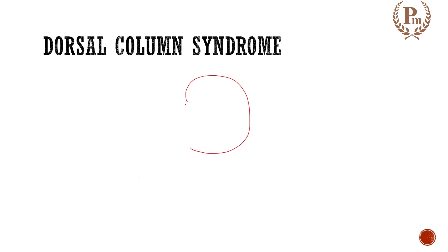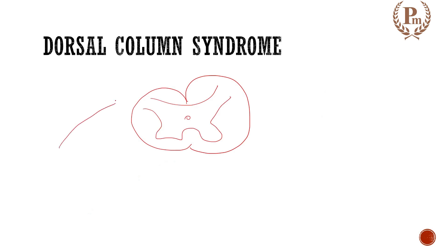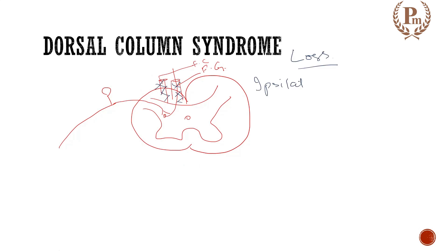Let us study about the dorsal column syndrome. To understand it, let us draw a spinal cord. Here is my dorsal root ganglion — these fibers ascend up, and here is a column, what we call as fasciculus gracilis and fasciculus cuneatus. If there is a unilateral lesion at these levels, what will be the loss?